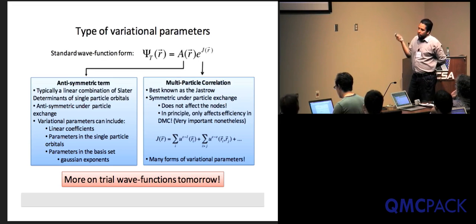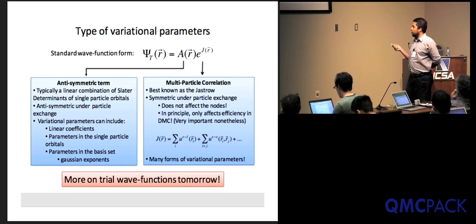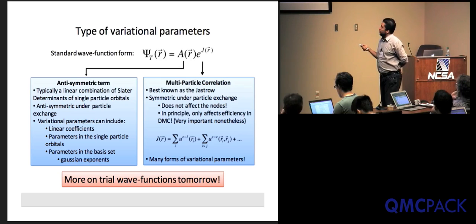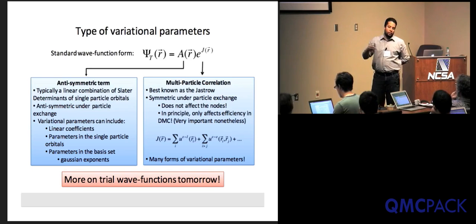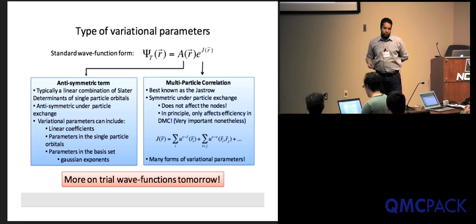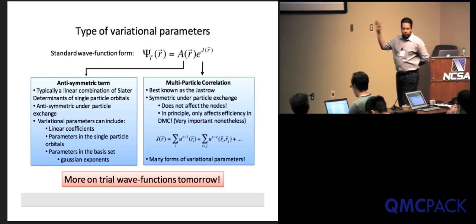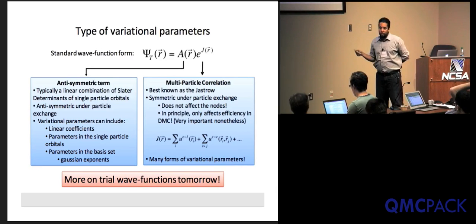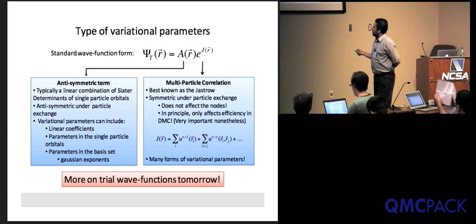You typically get something like 10 or so parameters per atom, though it can be much more. The antisymmetric term's parameters tend to be linear — if you think about a linear combination of Slater determinants, you can optimize the coefficient in front of every determinant, optimize the orbitals themselves, or even optimize parameters in your atomic basis set. We typically take orbitals from a mean-field calculation like DFT, but you don't have to stick to them.